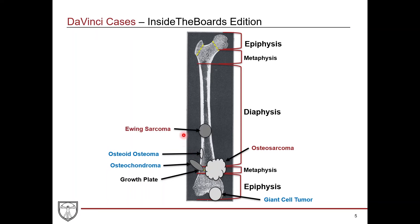The last tumor is Ewing sarcoma. This is typically seen in young boys under the age of 15. They occur in the diaphysis of long bones, but can also appear in the pelvis, scapula, or ribs. Biologically, it's described as an anaplastic small blue cell tumor — very aggressive and metastasizes early. For both Ewing sarcoma and osteosarcoma, they tend to metastasize to the lungs, so ordering a chest x-ray is often the first step in staging. The x-ray appearance is an onion skin pattern — multiple layers like the layers of an onion.